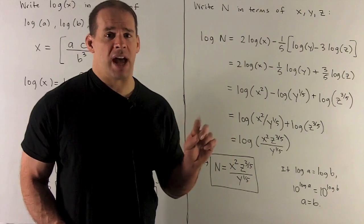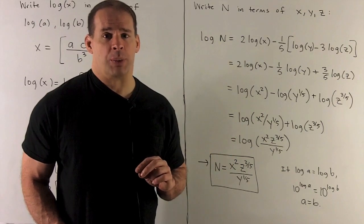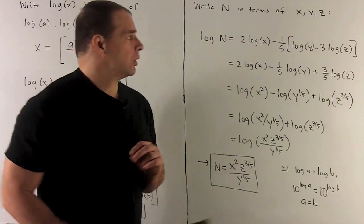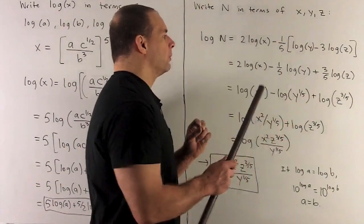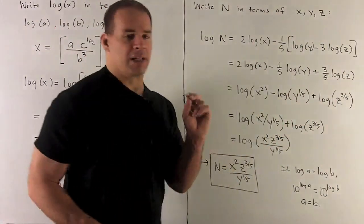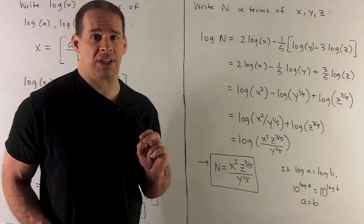So push that minus 1 fifth through. That gives me 2 log X minus a fifth log Y plus 3 fifths log Z.